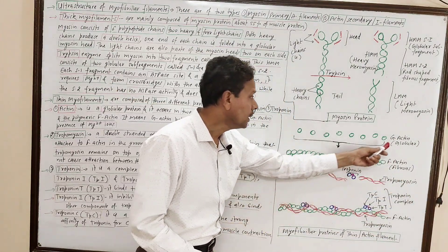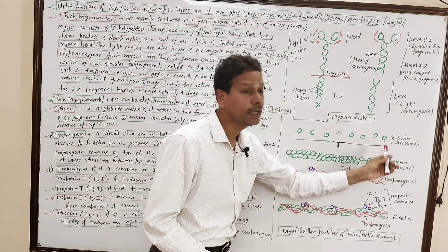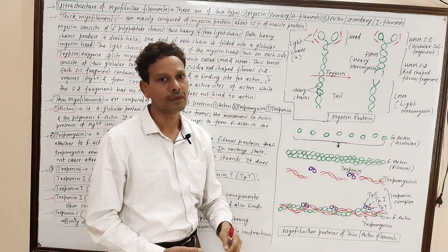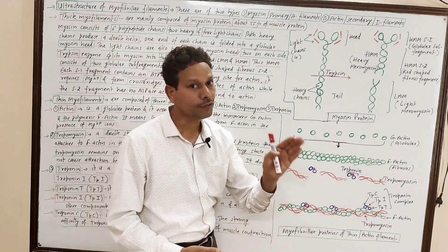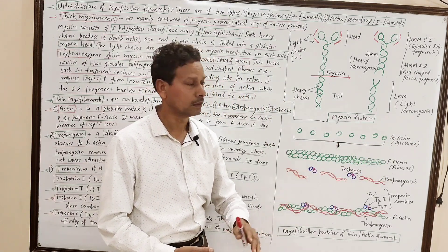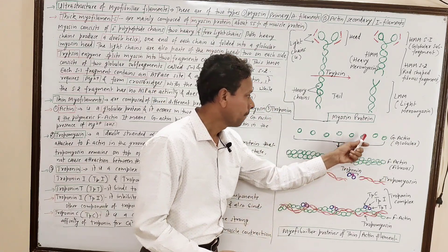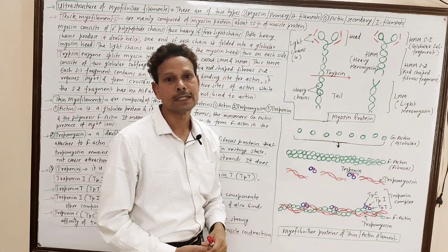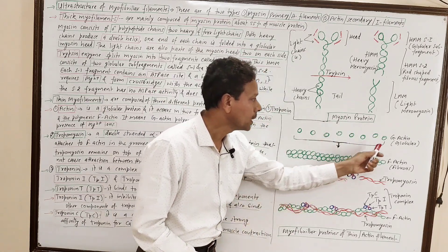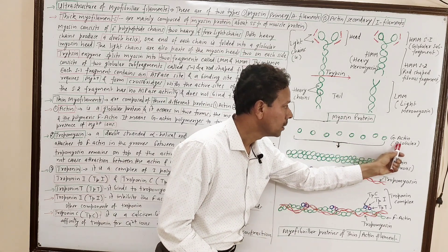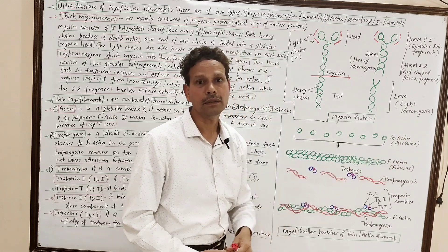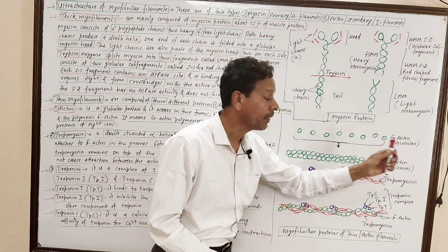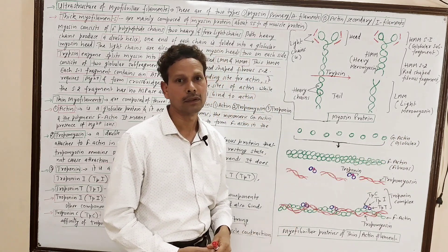This actin protein is further divided into two forms: one is G-actin and the second is F-actin.